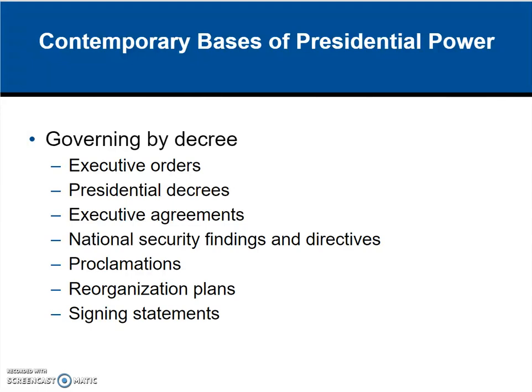Decree powers include executive agreements — basically like a treaty but without requiring Senate approval — as well as national security findings, directives, and proclamations, where the president can simply declare something. The president can also reorganize the structure of government. And as we've discussed, there are signing statements, which are when the president expresses displeasure with a bill while still signing it — writing what they disagree with and yet still signing it because there are pieces they believe are necessary for government to function.